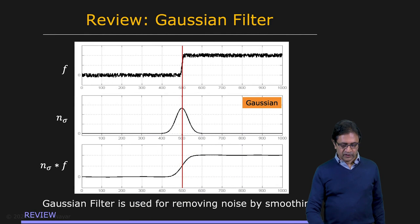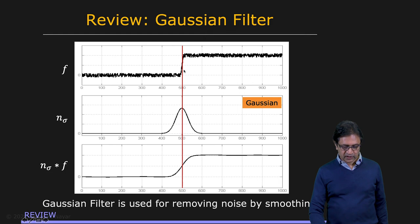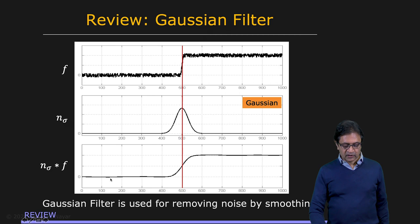First, the Gaussian filter and the use of the Gaussian filter to reduce noise. Here is your image, f of x, a noisy signal with an edge. The way we reduce noise in this case is by convolving it with a Gaussian, G sigma, where sigma is the width of the Gaussian. When you convolve it, you get a result which is a signal that's more or less free of noise. But of course, the price you pay is that the edge is somewhat blurred.